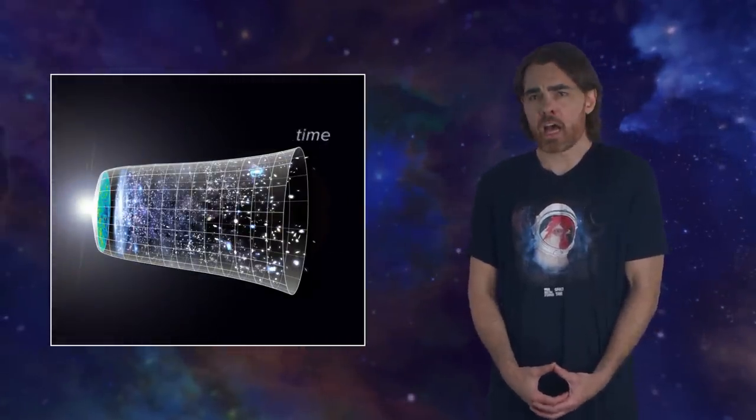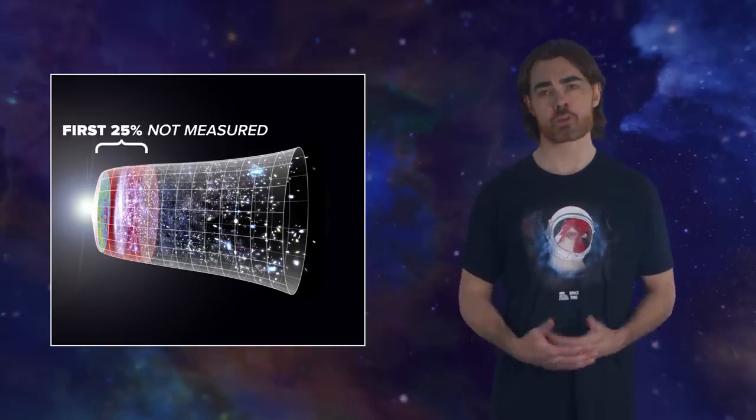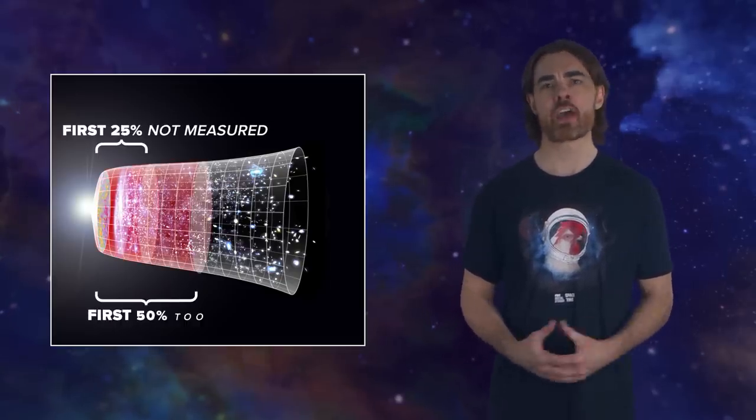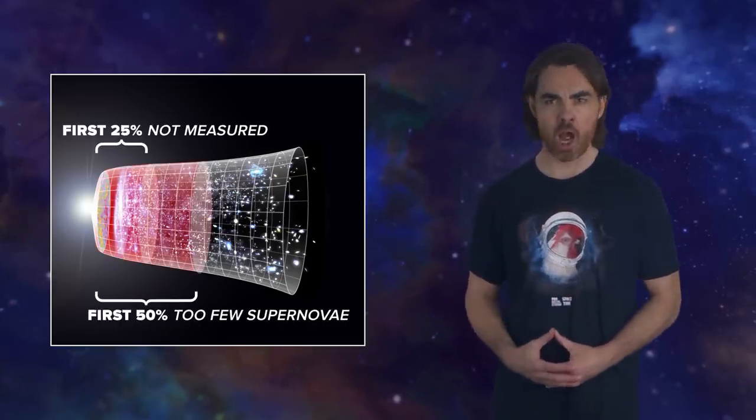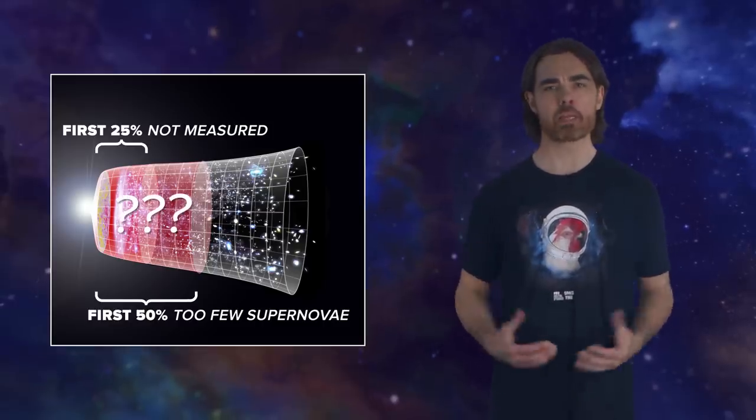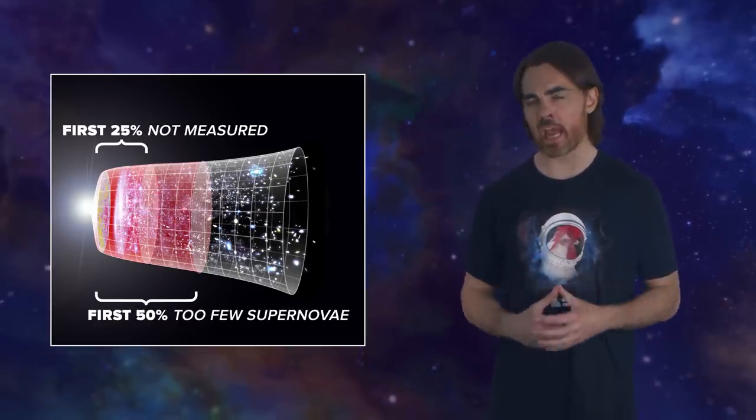Perhaps surprisingly, our measurements of the state of the early universe via the CMB may be more reliable than our measurement of its subsequent expansion via supernovae. Part of the reason for that is that supernovae aren't bright enough to see through all of cosmic history — we missed the first 25% and found too few supernovae over the first 50% of cosmic time. That early period is extremely important for understanding the true behavior of dark energy. This motivated Rizzoliti and Lusso to seek a completely new way to measure that expansion history.